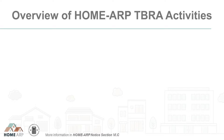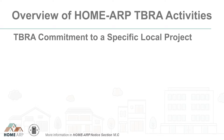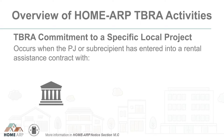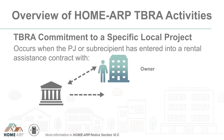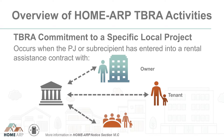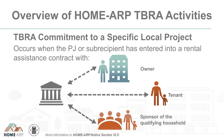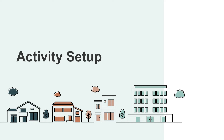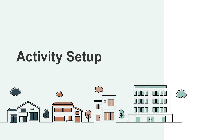Now let's go over Activity Setup. Before a PJ can set up and fund a HomeARP TBRA activity in IDIS, it must have a commitment to a specific local project. For HomeARP TBRA, commitment to a specific local project occurs when the PJ or subrecipient has entered into a rental assistance contract with the owner, the tenant, or the sponsor of a qualifying household in accordance with the provisions of the HomeARP Notice. Once the PJ has at least one executed rental assistance contract for a qualifying household, it may set up and fund a TBRA activity in IDIS.